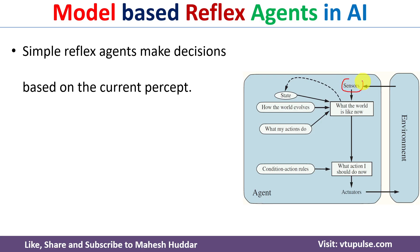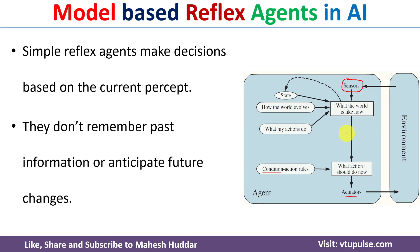The sensors sense the current environment. Based on the current percept, the percept will be searched in one of the conditions. If there is a match, an associated action will be returned and executed with the help of actuators. Then the sensor will sense the environment again. The simple reflex agent doesn't remember past information or anticipate future changes when an action is executed on the environment.